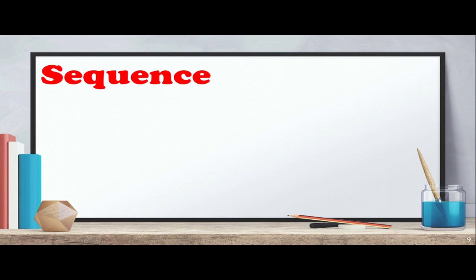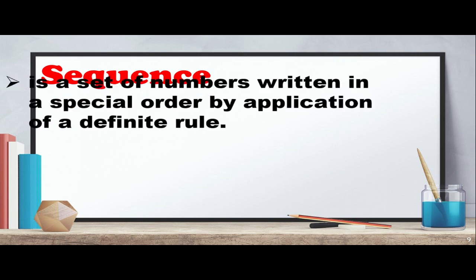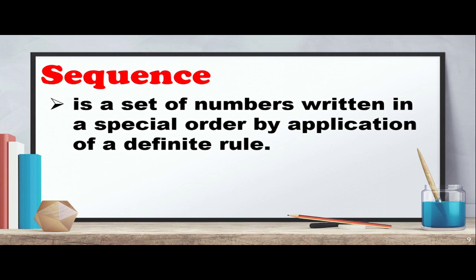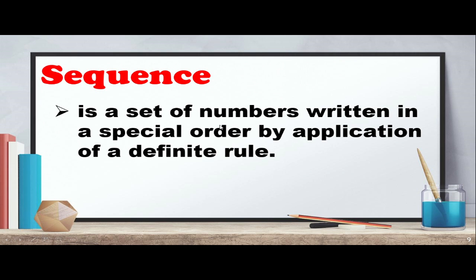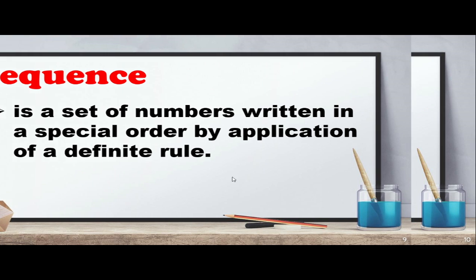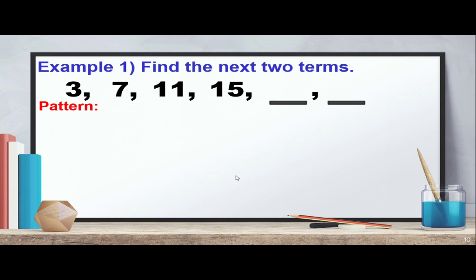So, what do we mean by sequence? A sequence is a set of numbers written in a special order by application of a definite rule. Again — a definite rule.